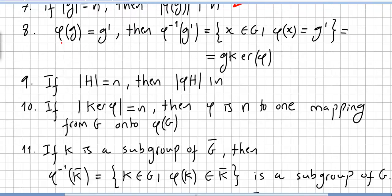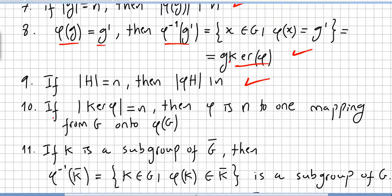Another property: given g-prime in the image, the inverse image of g-prime is the set of x in G such that phi of x equals g-prime, which equals the kernel of phi times g. If the order of H is n, then the order of the image phi of H will divide the order of H.